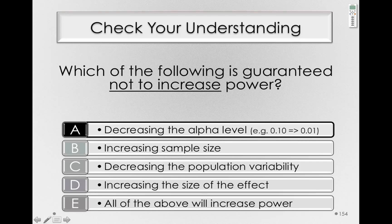For B, increasing the sample size will increase power if the alternative hypothesis is true. For C, decreasing the population variability will actually increase power when the null hypothesis is false. For D, increasing the size of the effect will increase power if the null hypothesis is false, or in other words, the alternative hypothesis is true. And E, of course, can't be true because some of these will not increase power.